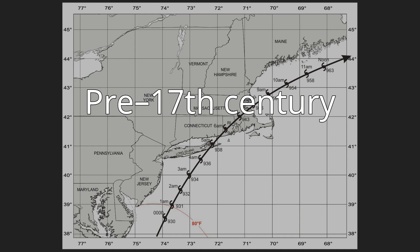Pre-17th Century: Multiple intense hurricanes Category 3 and above hit New England in pre-Columbian times between 1100 and 1150, 1295, 1300, 1400, 1404, 1407, 1446, and 1450, respectively.